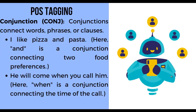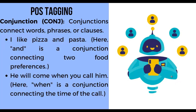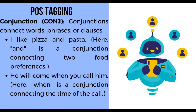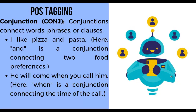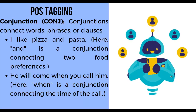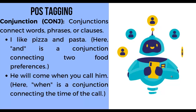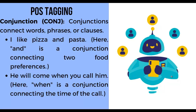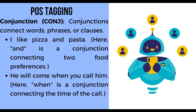Next, conjunction. Conjunctions connect words, phrases, or clauses. First example: 'I like pizza and pasta' — here, 'and' is a conjunction connecting two food preferences. Second example: 'He will come when you call him' — here, 'when' is a conjunction connecting the time of the call.